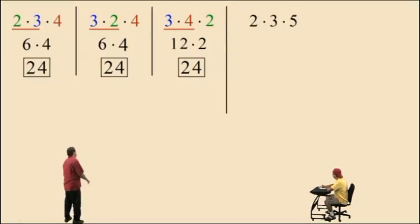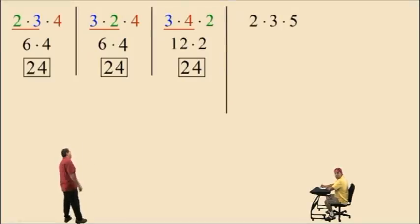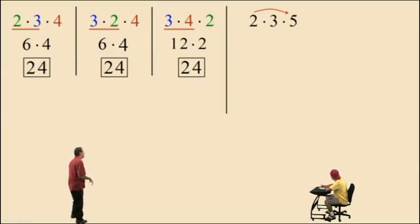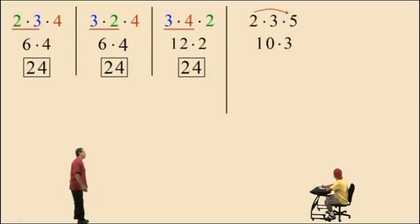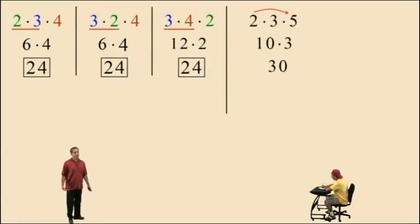Let's look at 2 times 3 times 5. Let's bust out some kung fu here — since we can multiply in any order, let's do 2 times 5 because that gives us a nice 10. Then we have 10 times 3, which is the same as 3 times 10, and that answer is 30.